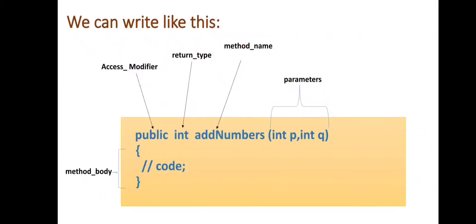Now we are going to discuss about method name. The method name should typically represent what its task is — that is, the method name indicates what type of task the method will perform. Next, let's discuss about parameters. Sometimes we have to pass data to the method to perform certain tasks or operations on that data, and that data is called parameters, also called arguments.